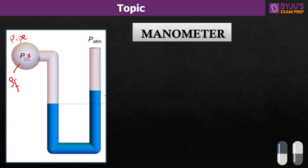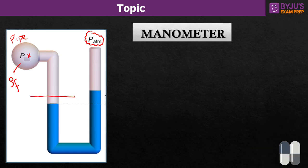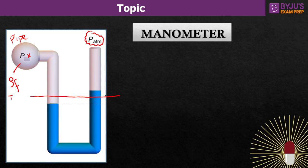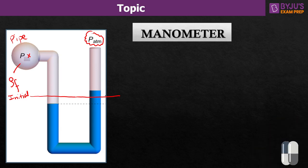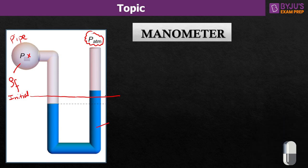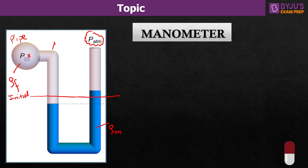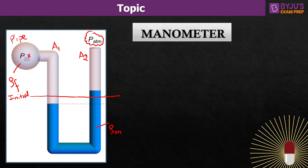I am talking about the situation when the manometer was not connected to the pipe — both limbs were open to the atmosphere. According to Pascal's law, the level of manometric fluid in both limbs was the same. This was the initial level when both limbs were open to the atmosphere. Let me call this initial level A.